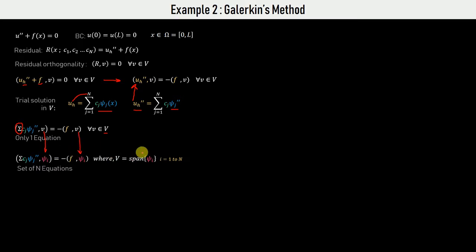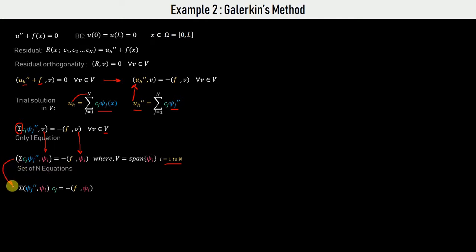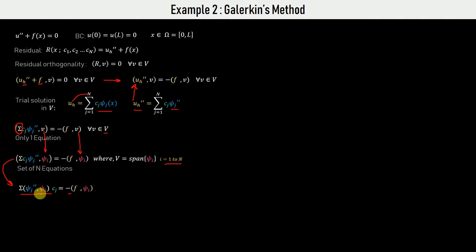This gives us a set of i equations where i varies from 1 to n, and n is the dimension of space V. Since this is a summation, we can take CJ out of the summation. Distributing psi_i and pulling CJ's out, we get a combined form. You can expand by putting in values of j and i to verify how this follows.